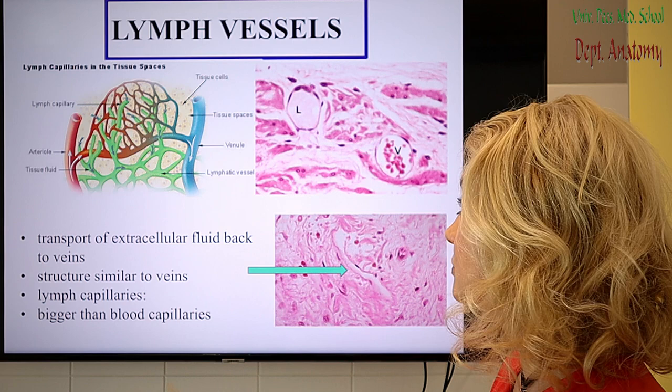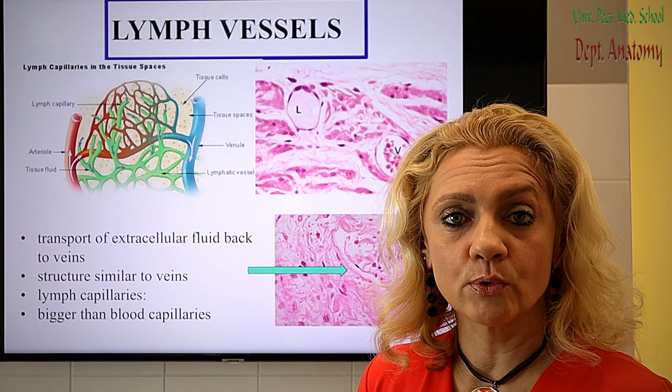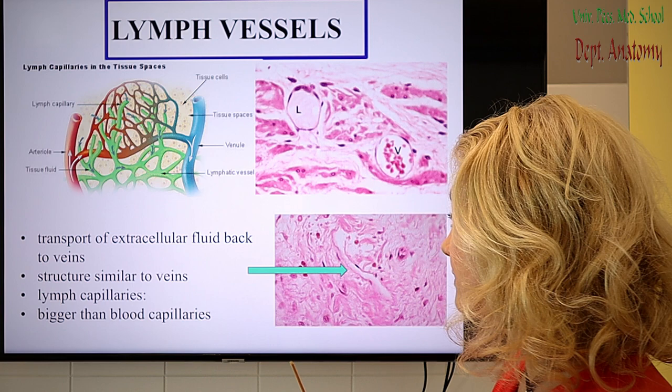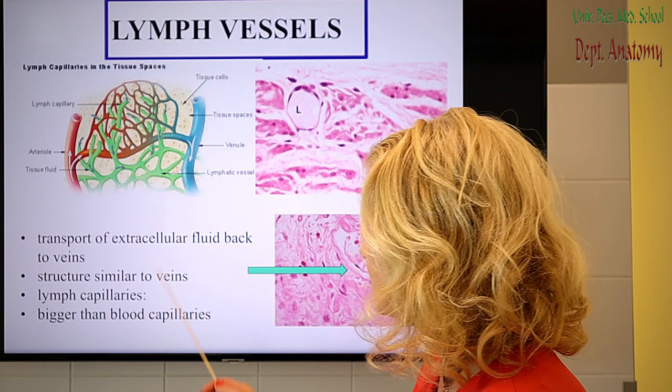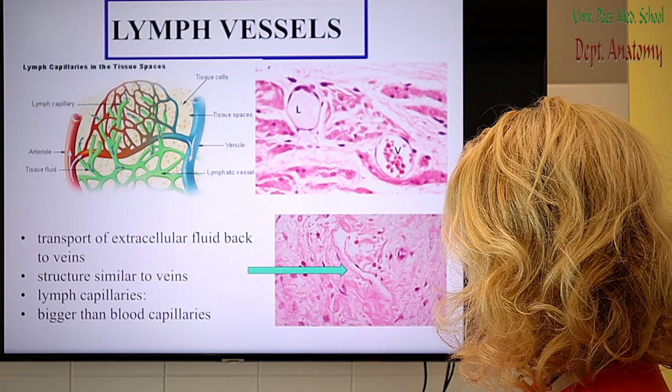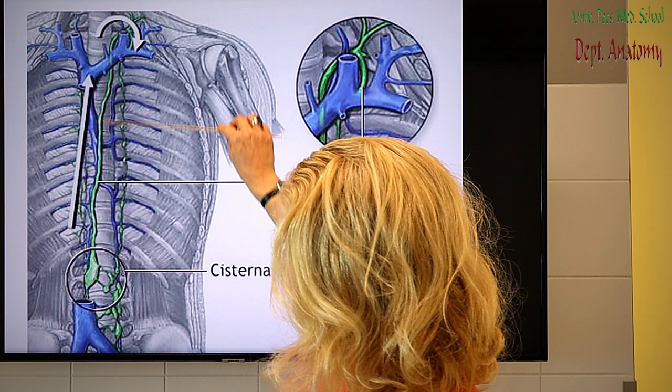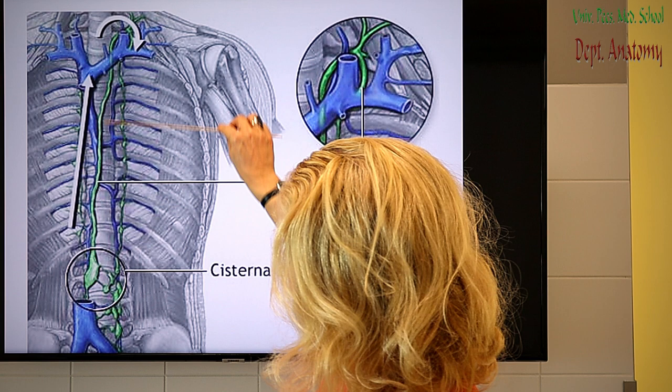A few words about lymph vessels: they are also vessels, so they have endothelial lining. You do not need to recognize them in slides at this point, but you should know that they transport extracellular fluid back to veins. The structure is similar to same-sized veins but even a little thinner. At the end, the big lymph ducts lead the lymph — the extracellular fluid — back to the venous system. Thank you for your attention.